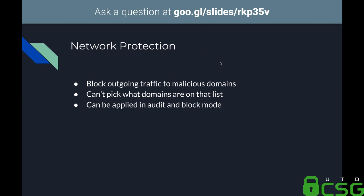Network Protection blocks outgoing traffic to known malicious domains — a neat idea built into Windows, making it harder to circumvent. Unfortunately, there's no way to see what domains are on that list or add your own, so you're beholden to Microsoft's judgment. It can be run in audit or block mode and is useful in a large corporation where you trust Microsoft's URL list.